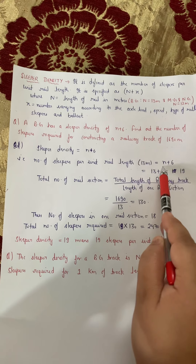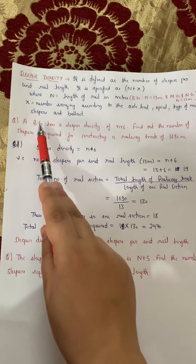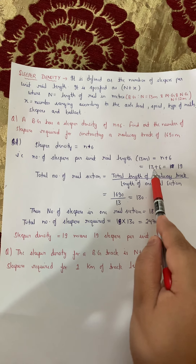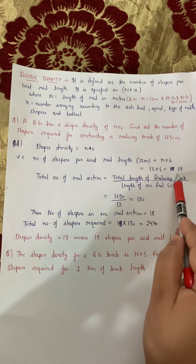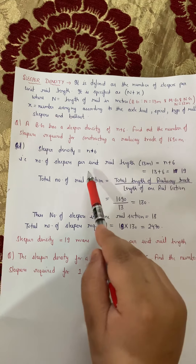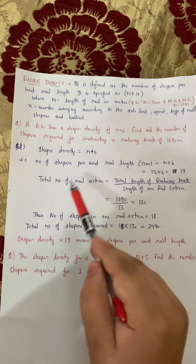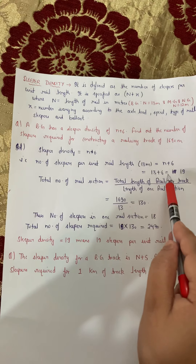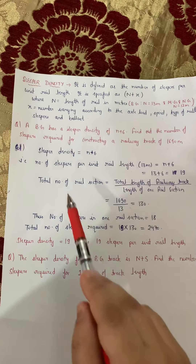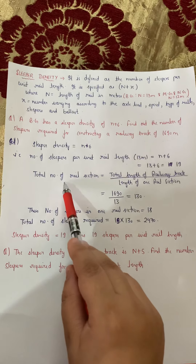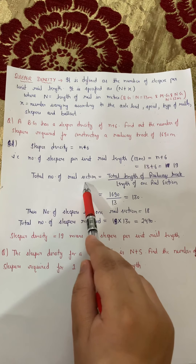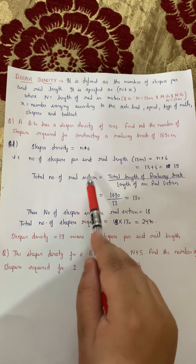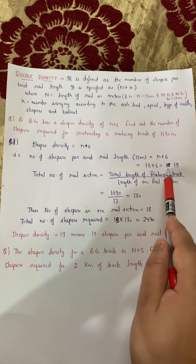Here, n is the length of the rail section in meters — jo bhi ek rail section ki length hai meters mein, use hum n kehte hain. Broad gauge ke case mein length of one rail section hoti hai 13 meters, and meter gauge and narrow gauge ki case mein hoti hai 12 meters. Accordingly, question mein jo bhi gauge given rahega, aap n ki value put karenge.